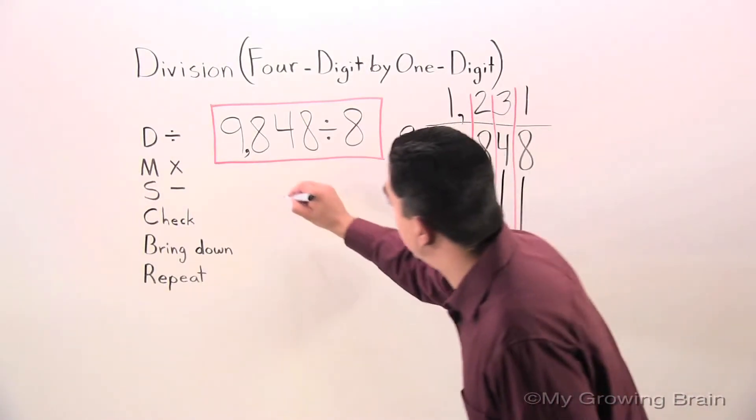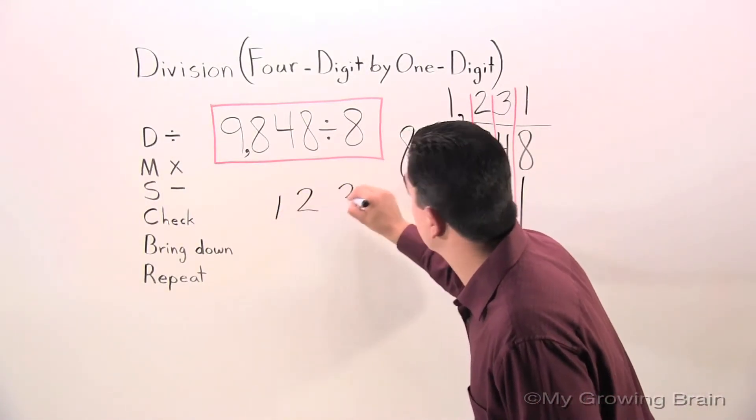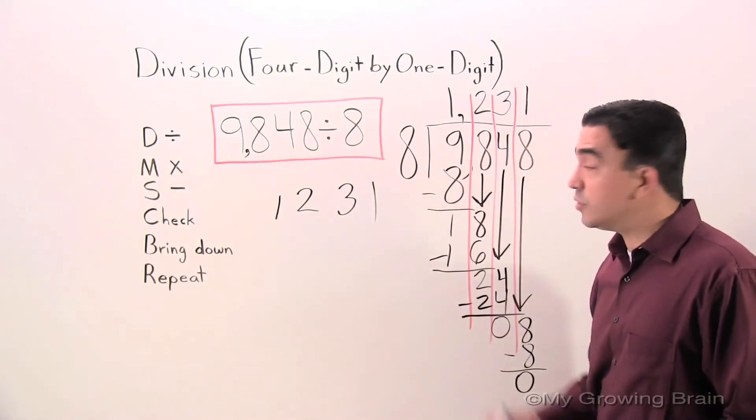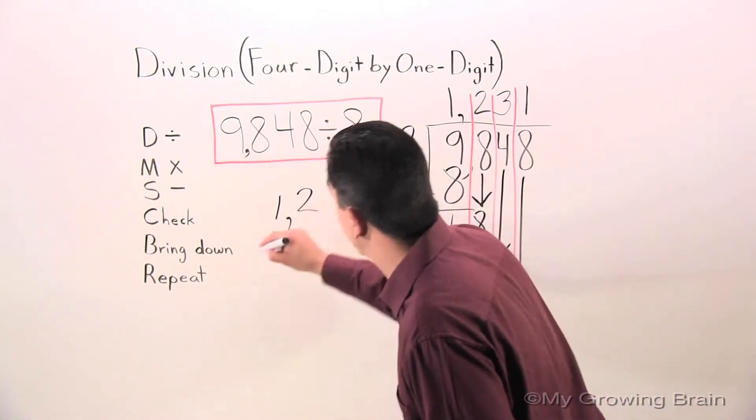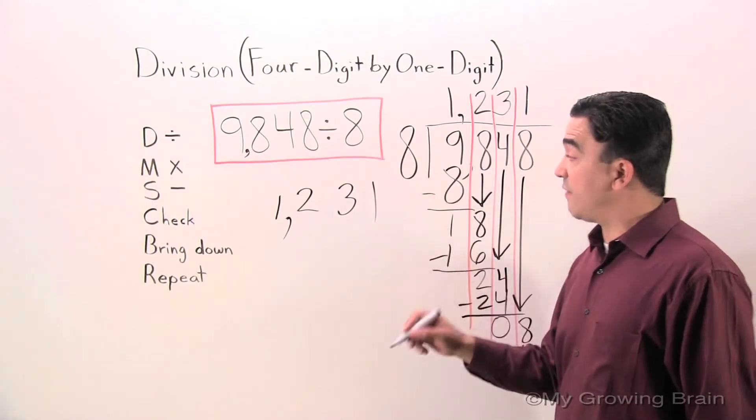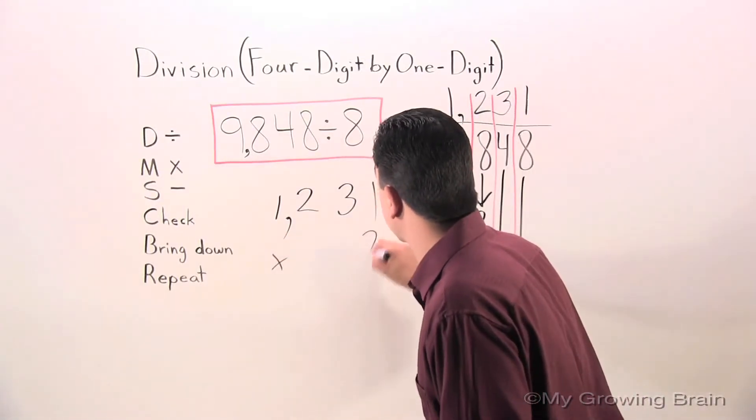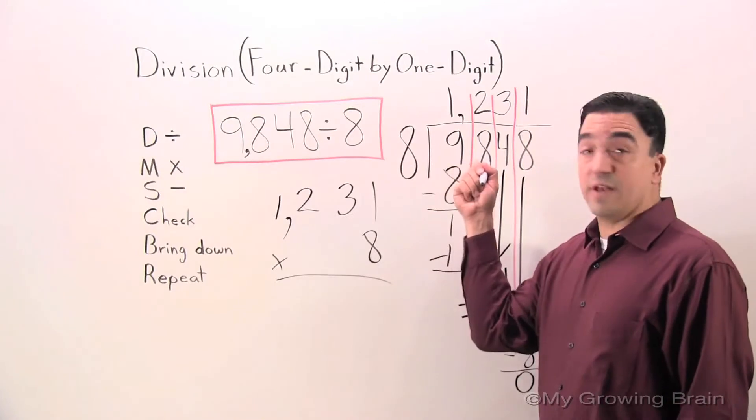So, I'm going to write the quotient over here, 1,231. I'm going to multiply it by the divisor, which is 8. We want to get the dividend.